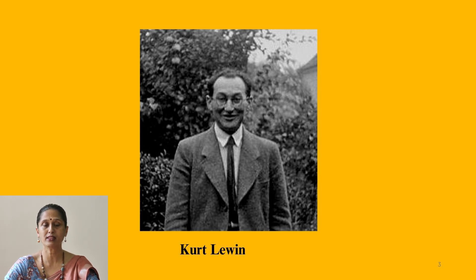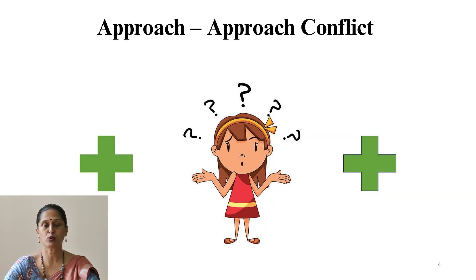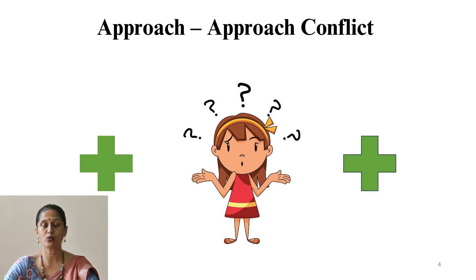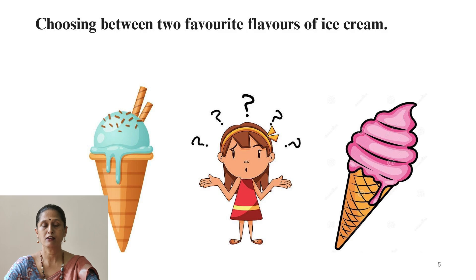Let's understand these types with examples. Approach-approach conflict is intrapersonal in nature and occurs within oneself. In this type of conflict, there are two equally desirable goals, but one needs to make a choice. In life, we may be faced with two appealing outcomes but need to choose only one, experiencing a double approach conflict. For example, choosing between two reputed colleges for admission, or choosing between two favourite flavours of ice cream.